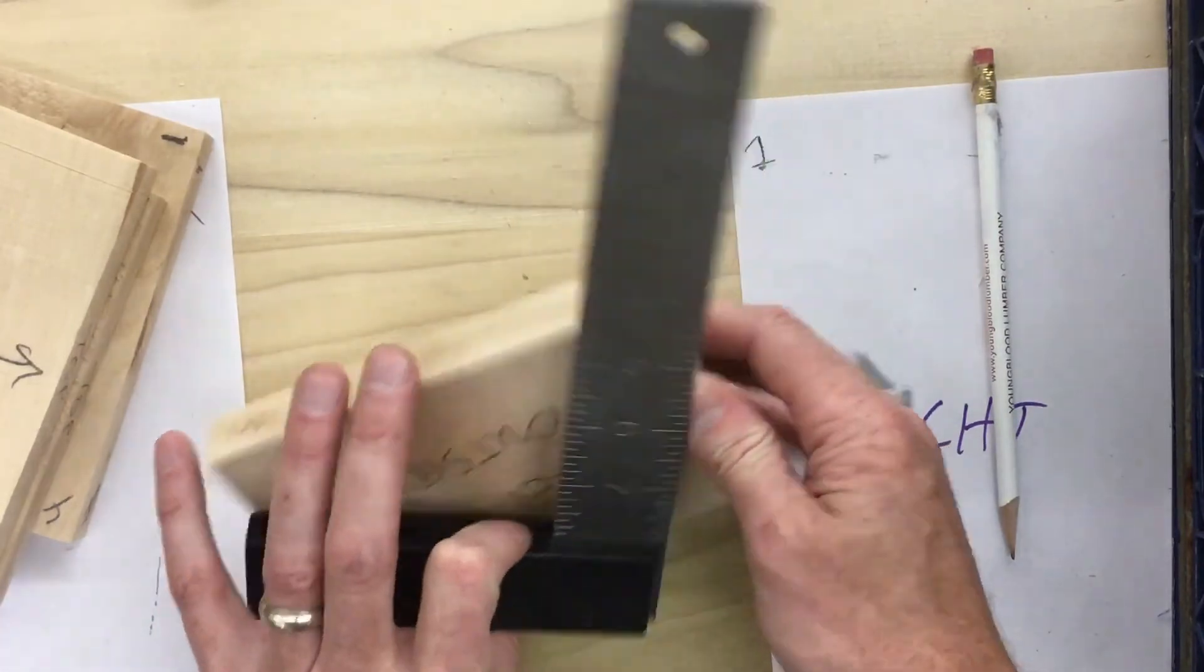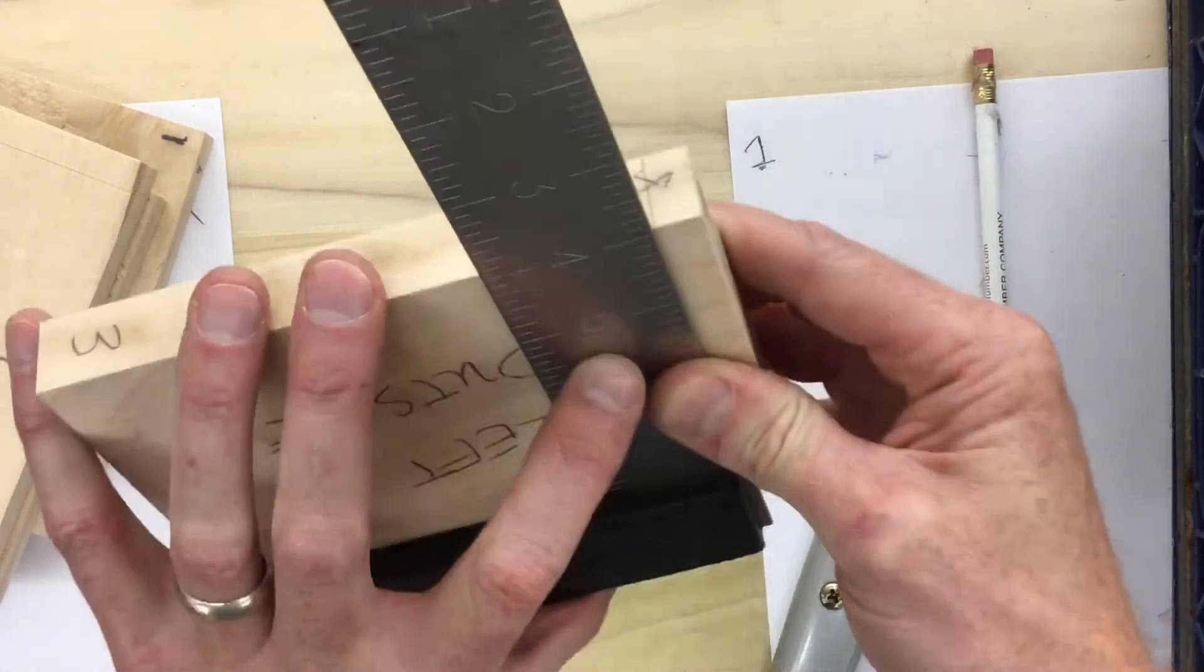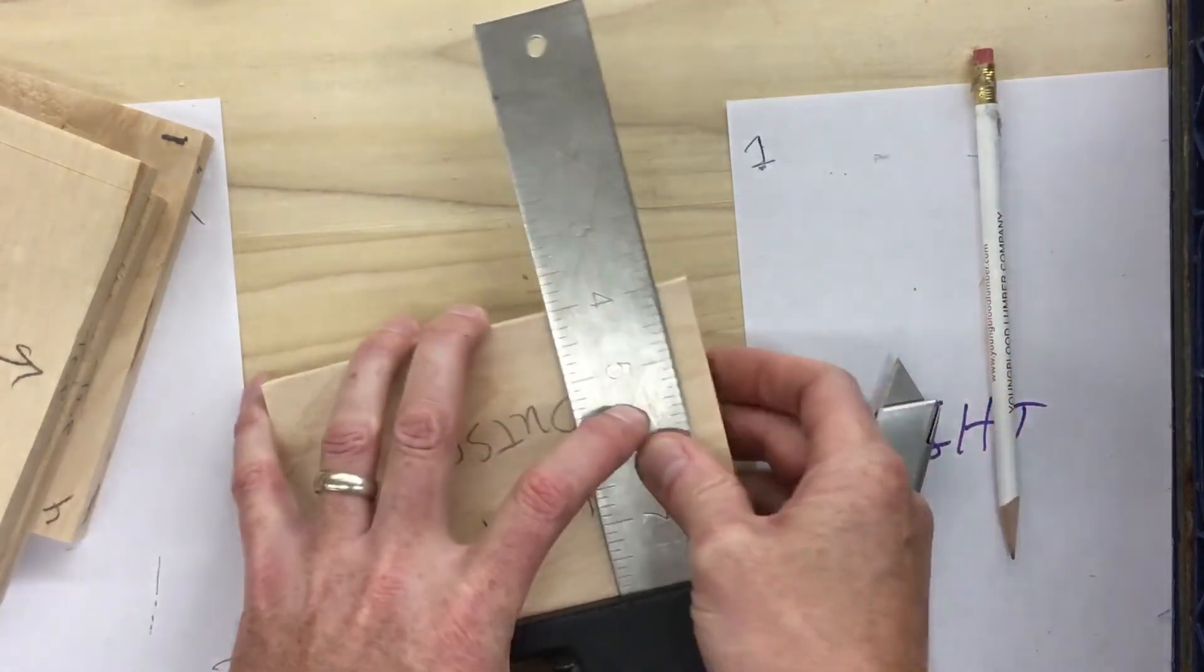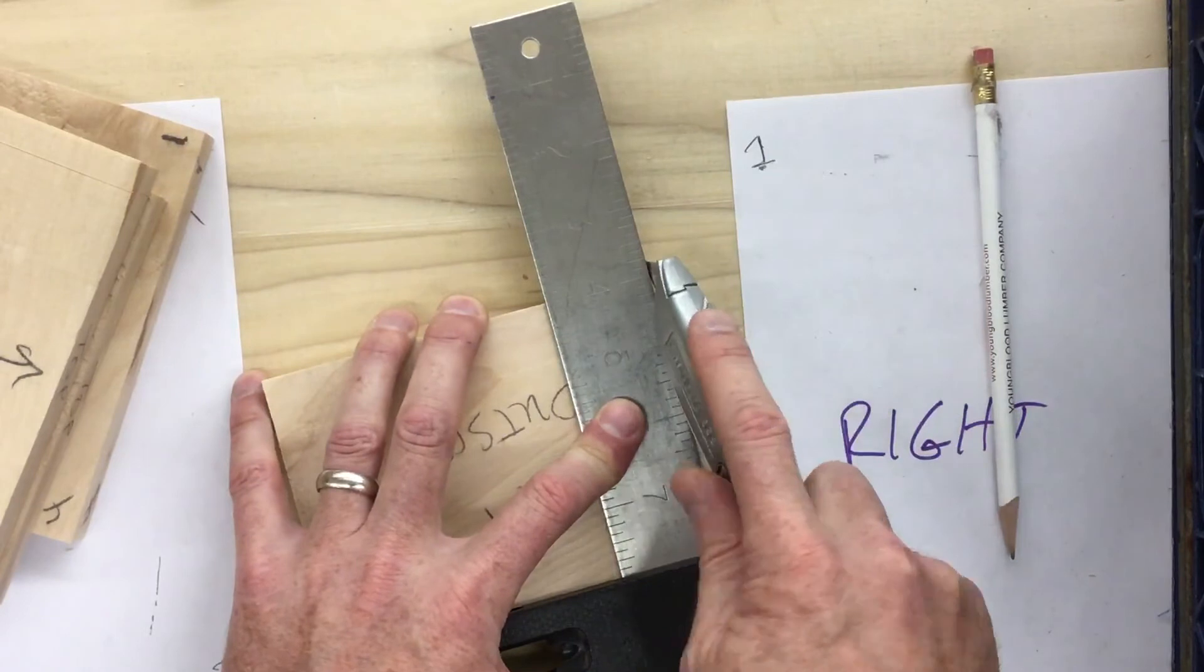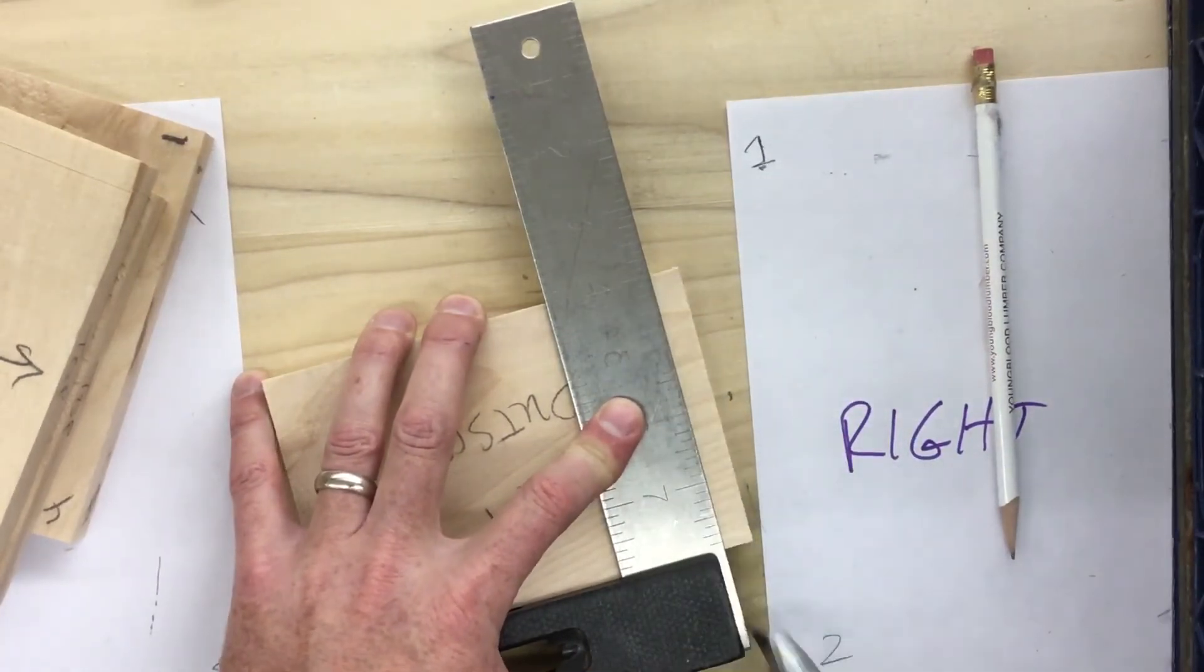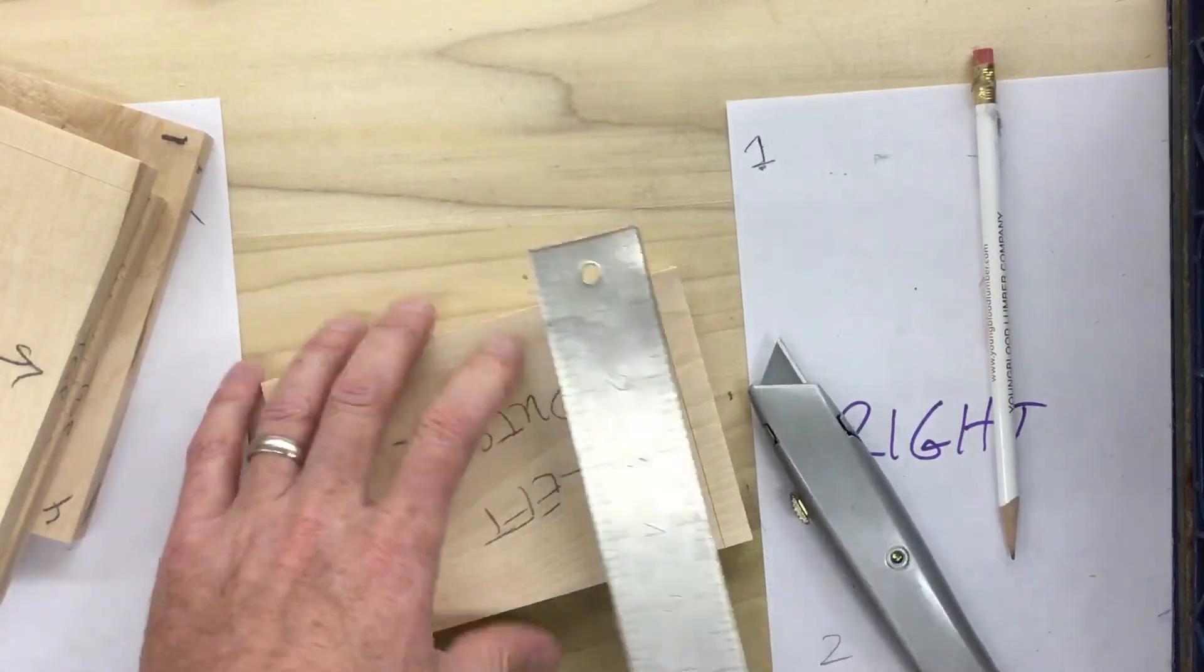Then I'm going to move my square to this edge. Same thing, I'm going to line it up right here with that edge. It should be three-eighths of an inch. Very carefully, making sure I don't cut myself, that I'm not cutting into my fingers.